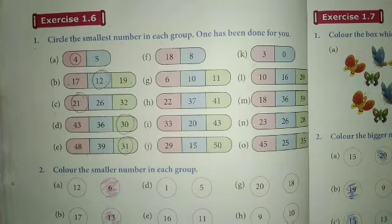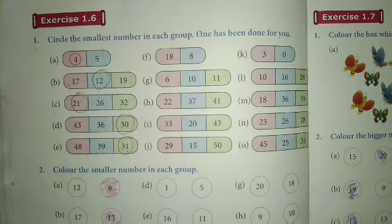Next, 48, 39, 31. 31 is smaller. तो इसलिए हमने 31 पर circle किया.